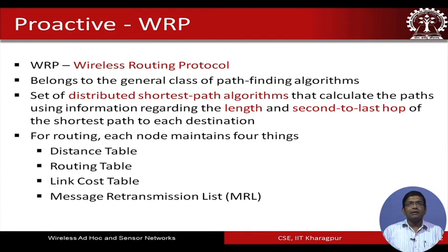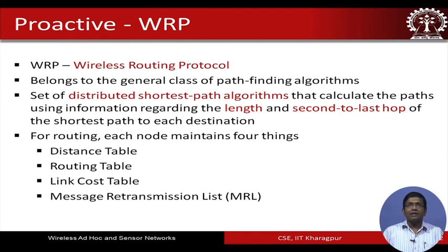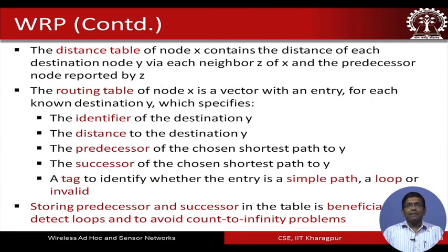Each node maintains four different types of tables. WRP is conceptually similar to DSDV as it is another proactive routing protocol, but the different types of information maintained are different. The four types are: the distance table, the routing table, the link cost table, and the message retransmission list (MRL).